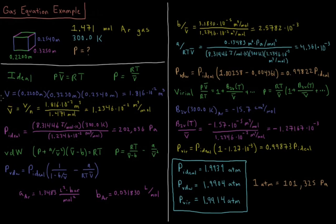First order of business is to calculate the volume. The volume of this box is going to be just multiplying each side. These are all orthogonal dimensions: 0.2200 meters times 0.3250 meters times 0.2540 meters, remembering that equation from geometry for a rectangular prism.